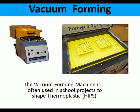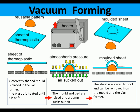In the vacuum forming process, a correctly shaped mold is placed in the vacuformer. The plastic is heated until soft, then the mold and bed are raised. A pump sucks the air out, and atmospheric pressure pushes the soft plastic over the mold. This is then allowed to cool and can be removed from the mold and the vacuformer, leaving the sheet of plastic shaped over the former.